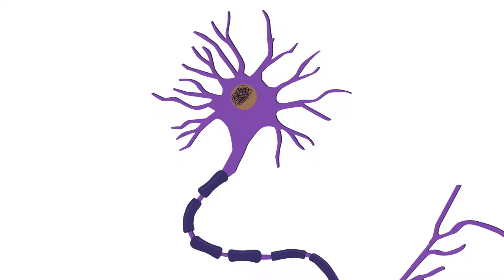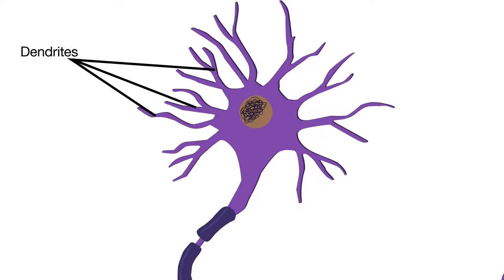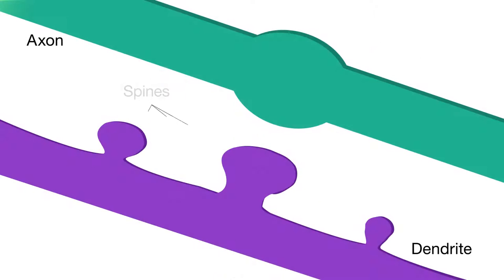Individual neurons have many branches, or dendrites, and each dendrite can be covered with thousands of tiny bumps called spines where messages are received from other neurons. Changes in spine size are one way memories are recorded.